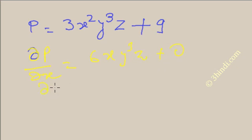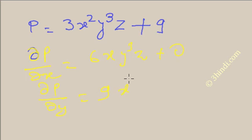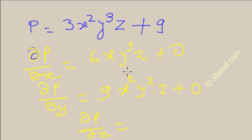del p by del y: differentiate y³ and treat everything else as constant. Differentiation of 3y³ is 3y², so multiplying gives 9x²y²z plus 0. Similarly, del p by del z: differentiation of z with respect to z is 1, so the result is 3x²y³ plus 0.